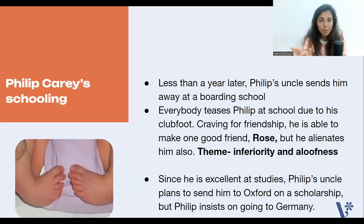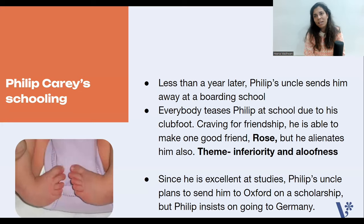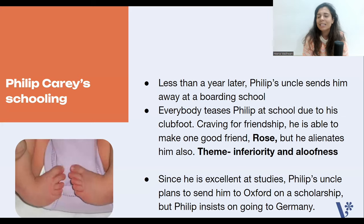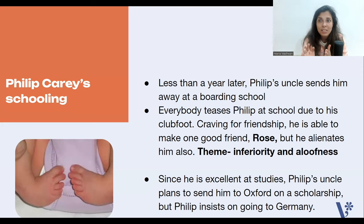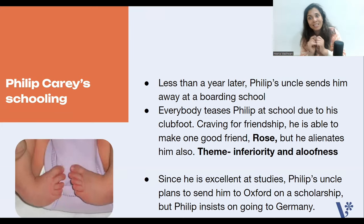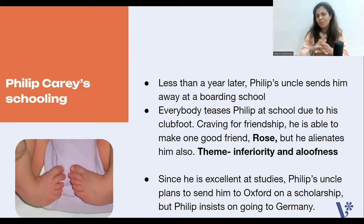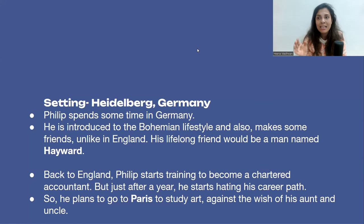Because he has no friends at boarding school, Philip makes books his friends. He finds comfort and love within books and education, and grows up to be an educated boy. Since Philip is excellent at studies, his uncle plans to send him to Oxford on a scholarship to become a minister. But Philip does not want to become a minister — he wants to go to Germany instead. Although his uncle and aunt do not agree, he insists and eventually goes. The setting changes from England to Heidelberg, Germany.